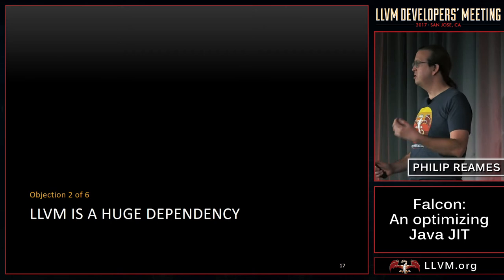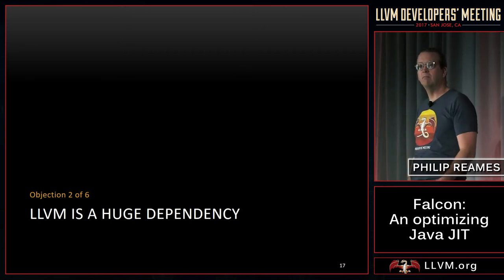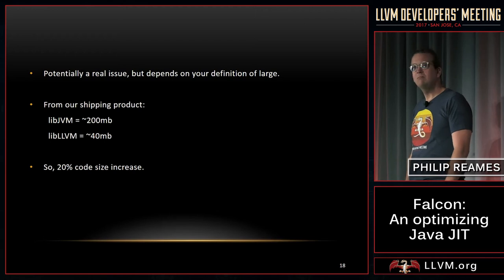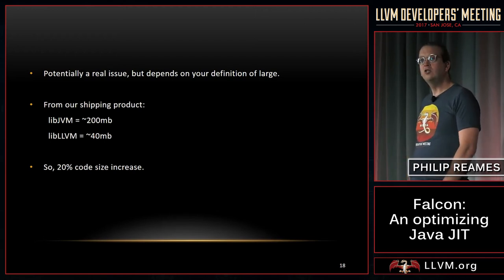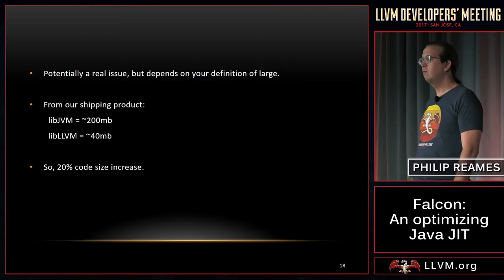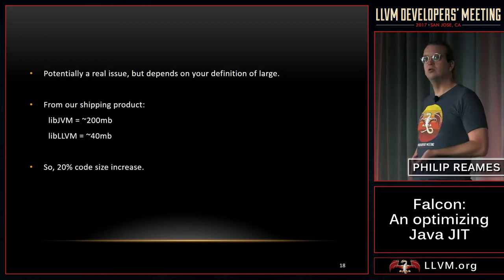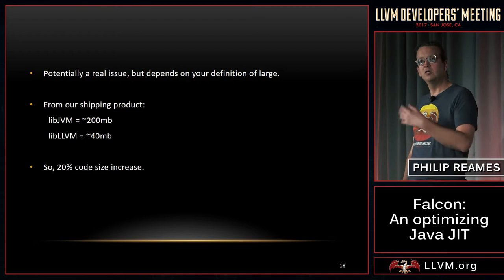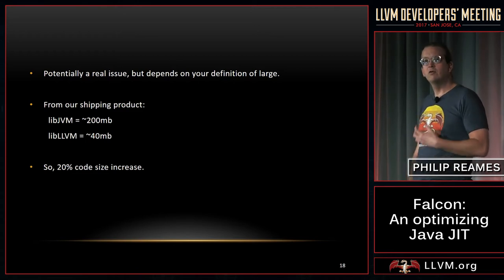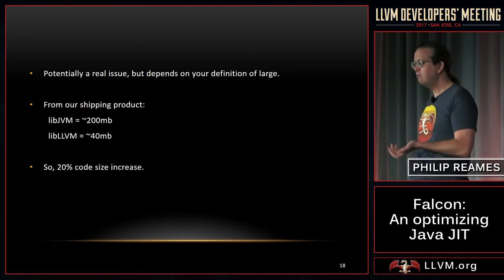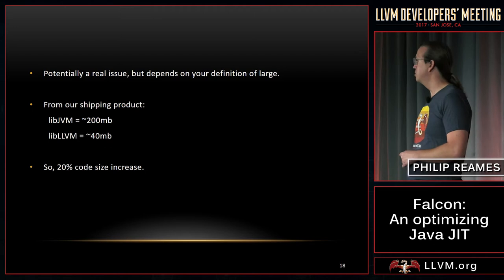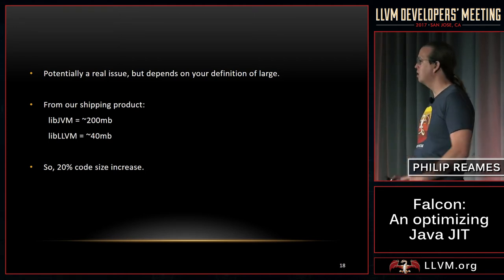The next common objection is: LLVM is a huge library — why would I want to add that as a dependency? This comes down to what your definition of 'large' is. For us, we ship a 200-megabyte library which is the JVM — a 40-meg library for LLVM doesn't really matter that much. We're also still shipping the old tier 2 compiler alongside the new one, and we've made no real effort to reduce the LLVM library size by ripping out non-x86 targets. If we were targeting embedded platforms rather than servers, this might be a much bigger issue, so it depends on your target platform.